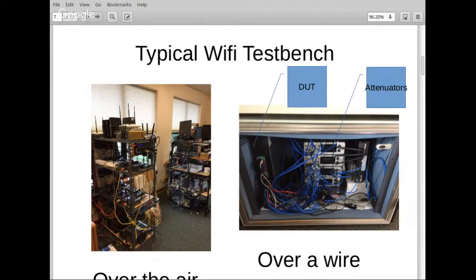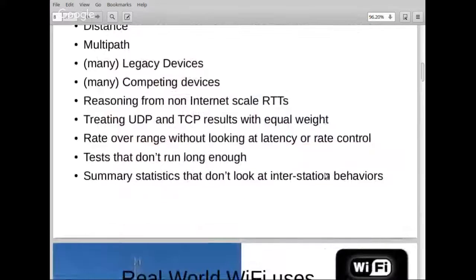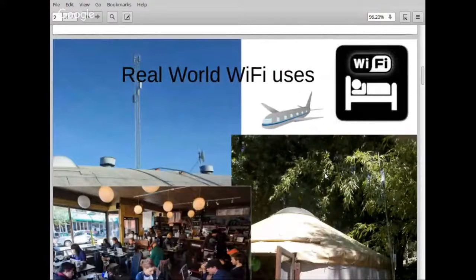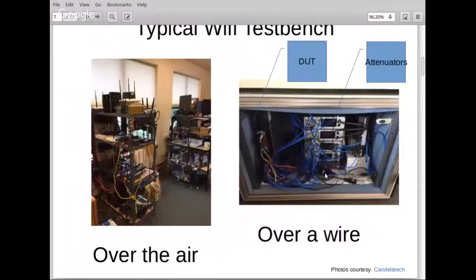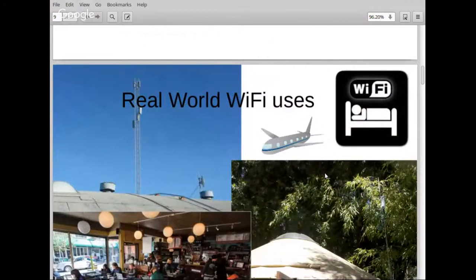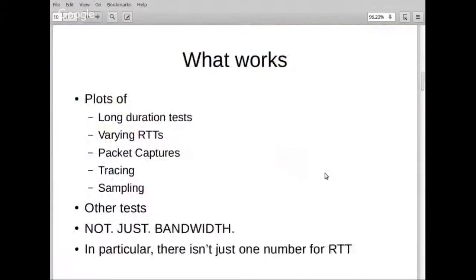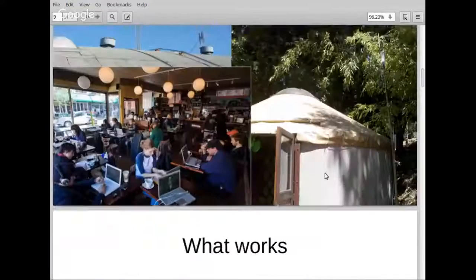Even the isolation box and isolation tests are not an emulation of where Wi-Fi is actually used. Real environments include archive.org's roof, coffee shops, airplanes, hotels, or a yurt in the middle of the woods with a long-distance Wi-Fi connection. The odds of getting applicable results from the lab setup are not as good as you'd like. The Make Wi-Fi Fast project focuses on metrics other than bandwidth that reflect these real environments.